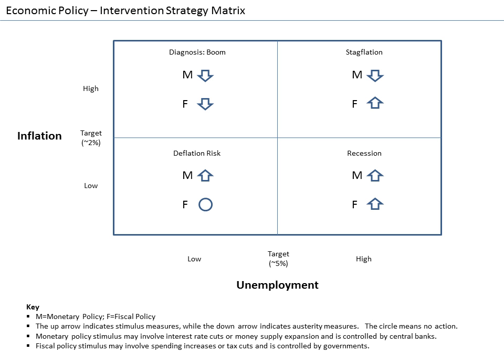Central bankers, who manage a country's money supply, try to avoid changes in price level by using monetary policy. Raising interest rates or reducing the supply of money in an economy will reduce inflation. Inflation can lead to increased uncertainty and other negative consequences. Deflation can lower economic output. Central bankers try to stabilize prices to protect economies from the negative consequences of price changes.